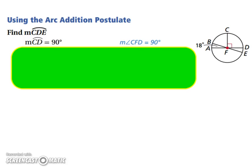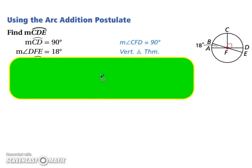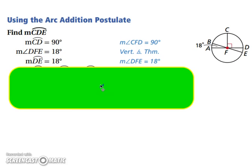Let's try one. Find the measure of arc CDE. Well, we know that the measure of arc CD is 90. It's a 90 degree angle, so that means CD will be 90 as well. And we also know that we have vertical angles, so we know that angle DFE will be 18 as well. Well, so that means the measure of arc DE is 18 degrees.